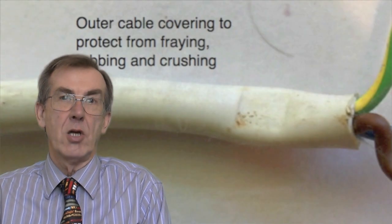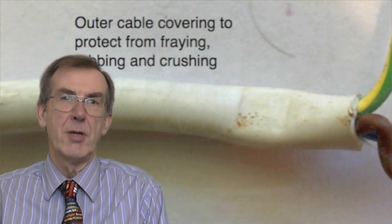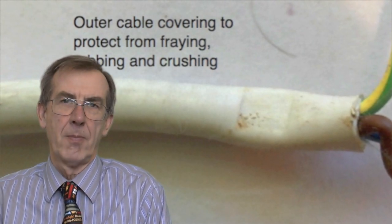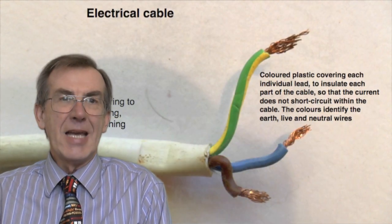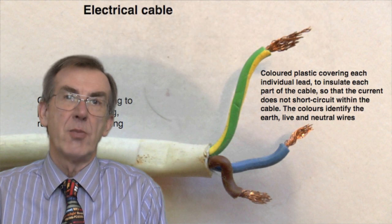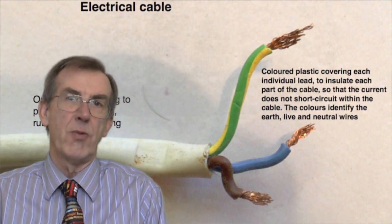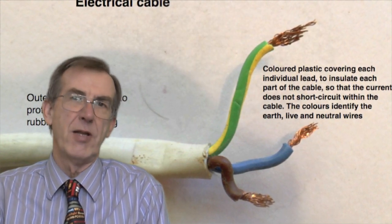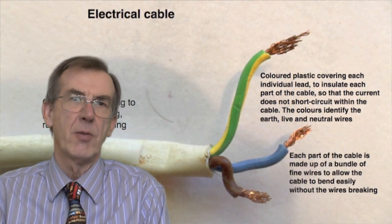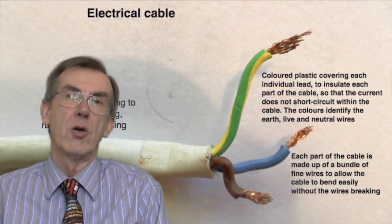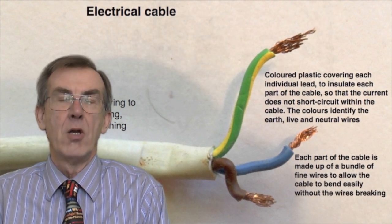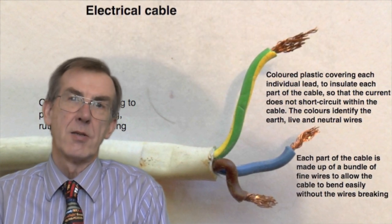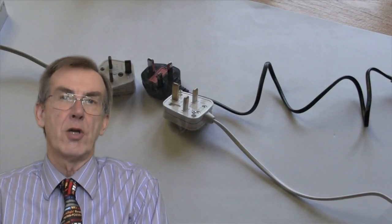The outer layer of that cable is largely there to prevent mechanical damage - cutting and scraping - and also provides insulation. The inner layers of plastic provide insulation between wires to stop them short-circuiting within the cable itself, to prevent the electricity taking a quick way around. They're also color coded so that we can identify one wire from another.